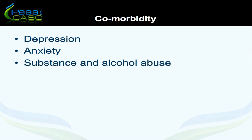Comorbidity includes depression and anxiety symptoms, as well as coping strategies involving substance use and alcohol abuse. For more complex PTSD cases — for example, if they've had previous histories of childhood sexual abuse — other comorbid issues could involve eating disorders, chronic suicidality, or severe dissociative symptoms.